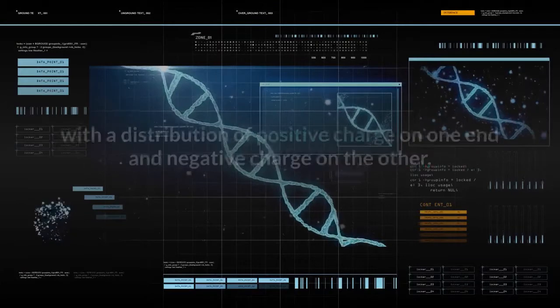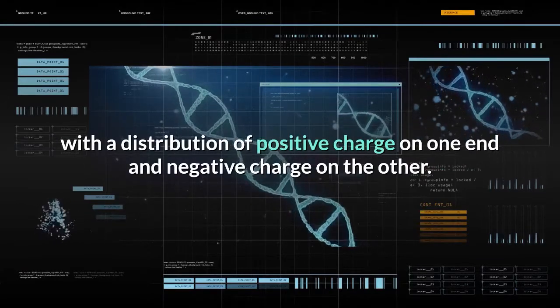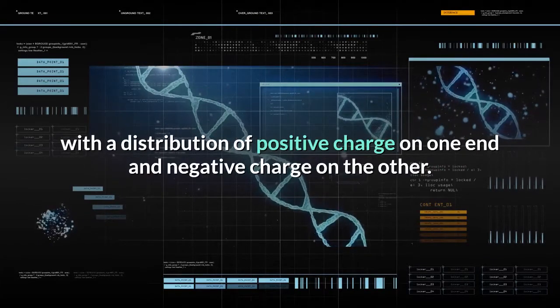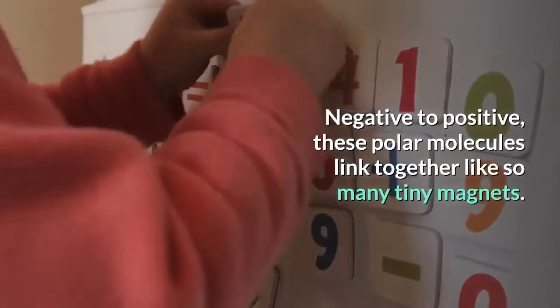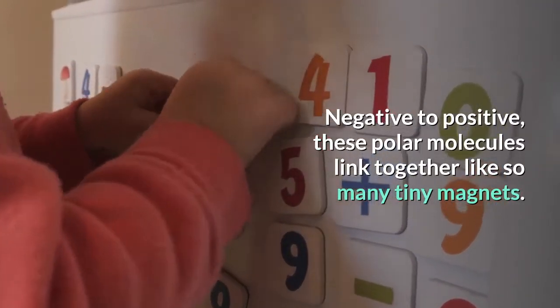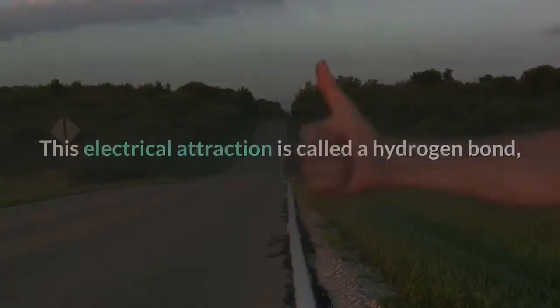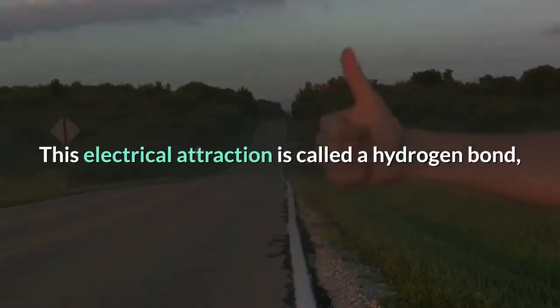The molecule has a distribution of positive charge on one end and negative charge on the other. Negative to positive—these polar molecules link together like so many tiny magnets. This electrical attraction is called a hydrogen bond.